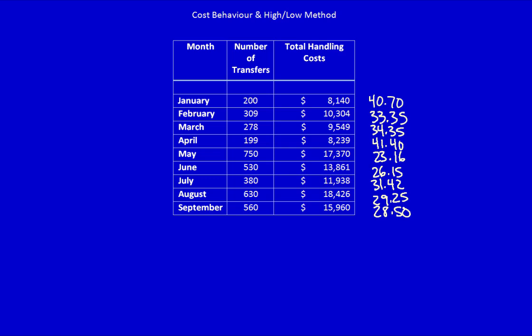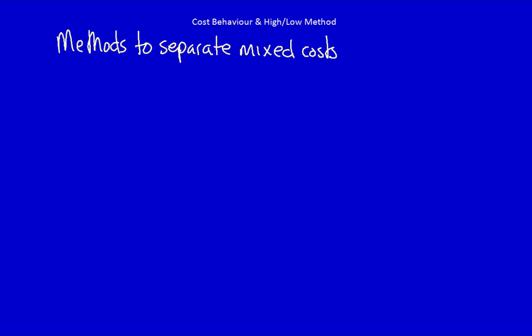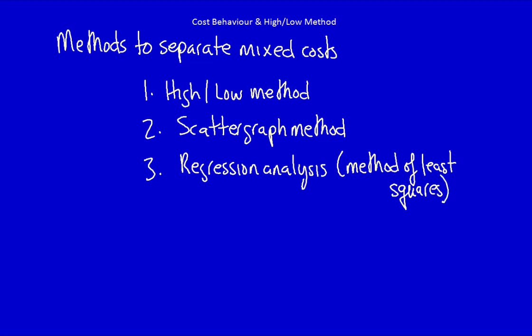What methods can be used to separate the fixed and variable costs into their individual components? There are three different methods. First is the high-low method. Second, scatter graph method. And third, regression analysis, also called the method of least squares.